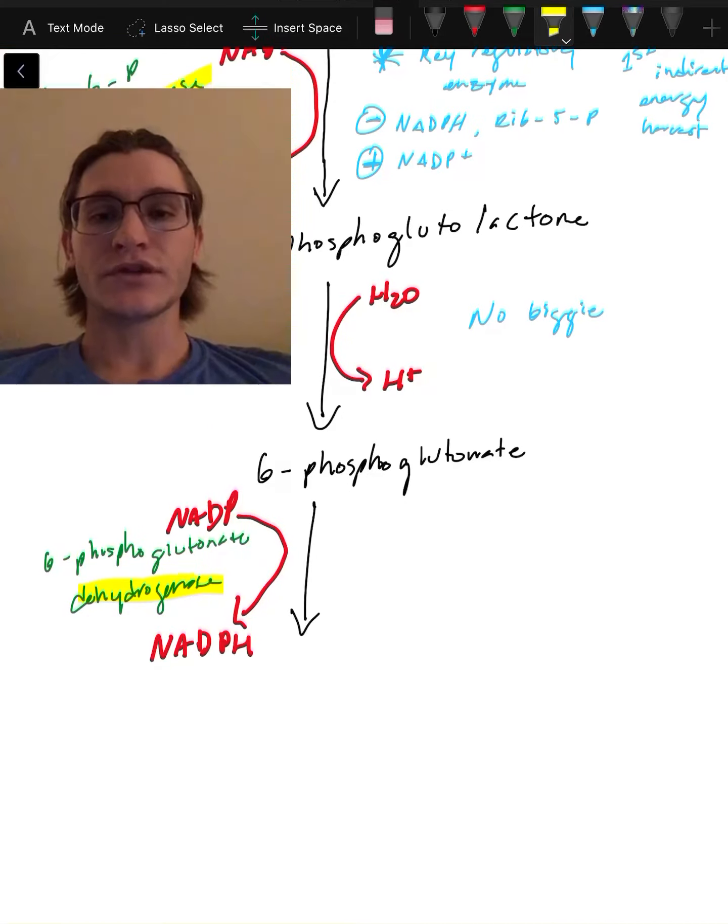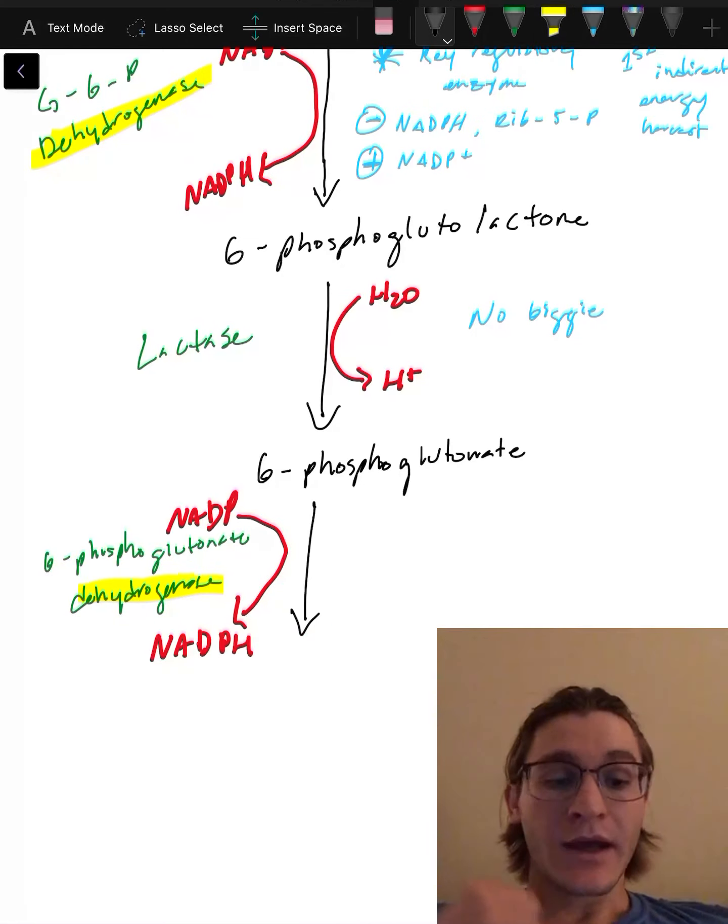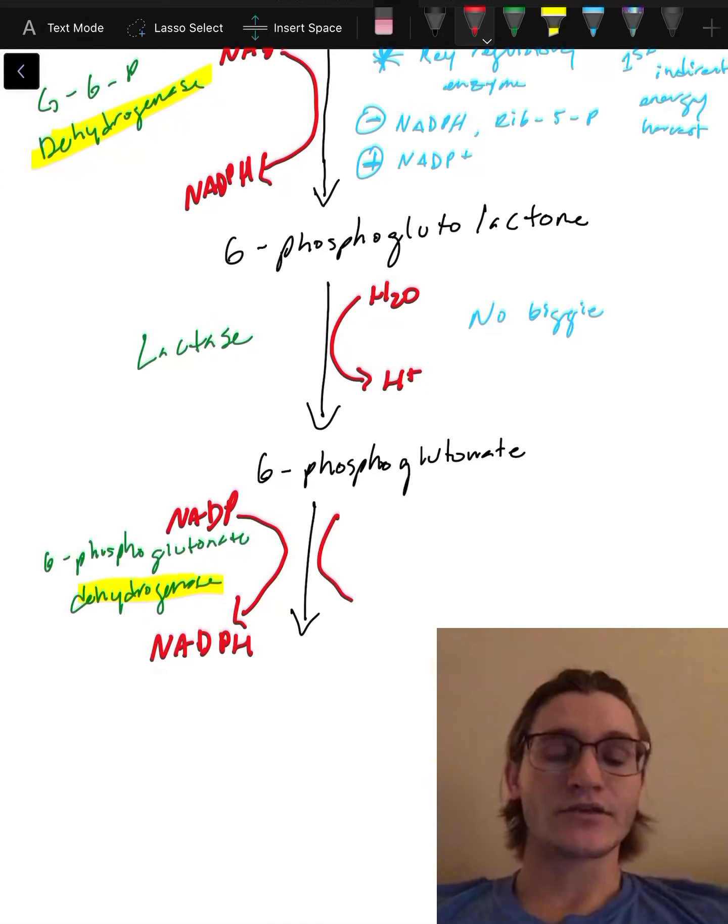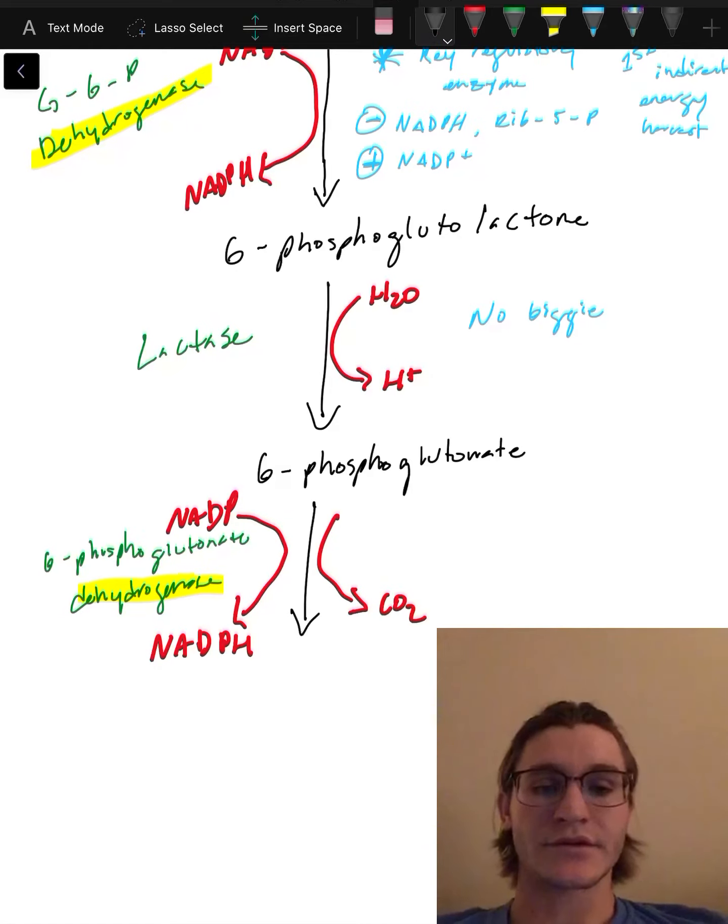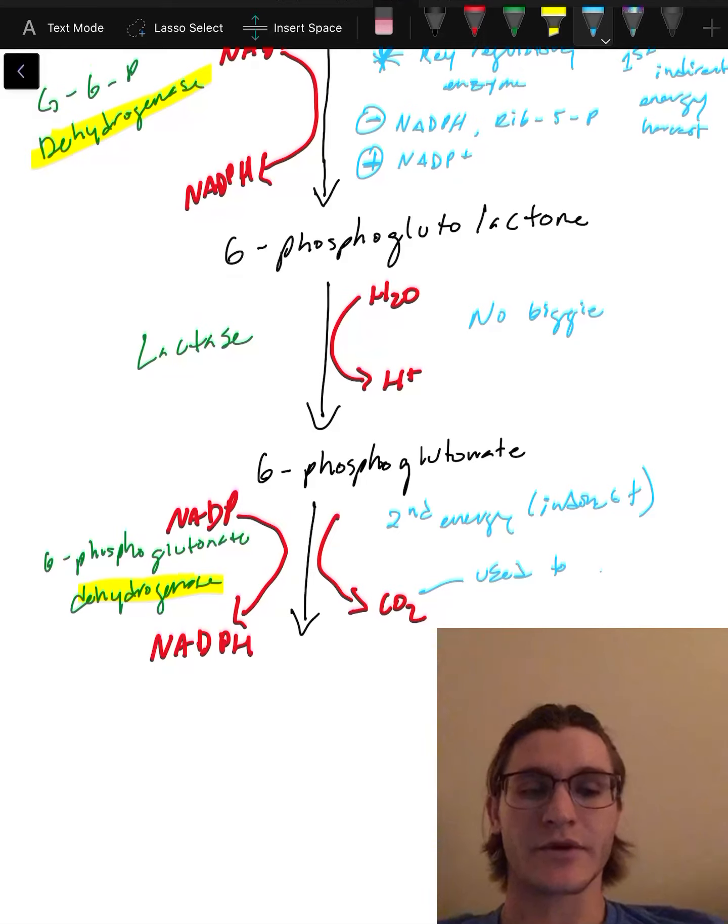This is our second indirect energy source, and we're also gonna have one more molecule coming off of it which is very important. Without this, we cannot make our pentose, which is the point of this—it's our main product. So we're gonna have CO2. That carbon is going to be used to make our pentose. We're gonna lose a carbon here, and that carbon is going to be picked up to make ribose 5-phosphate.